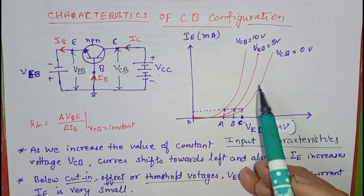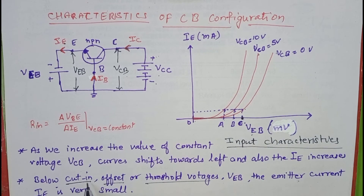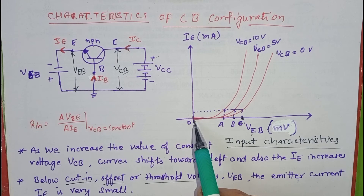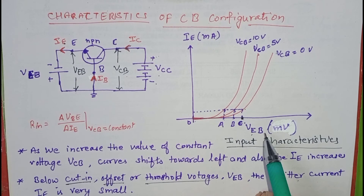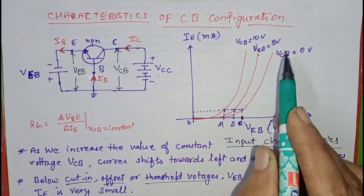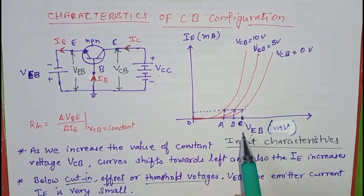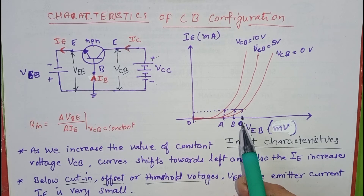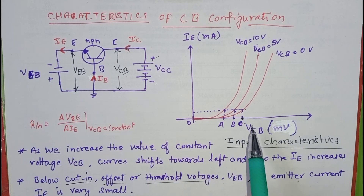By observing this curve, we can see clearly when the value of VEB is less than cut-in voltage, offset voltage, or threshold voltage — these are all the same — then IE is very small. But when we increase the value of VEB even very slightly beyond this point, there is a large increase in the current IE. When there is a rapid increase in IE with a small change in VEB, this shows that the input resistance is very less, because this junction is forward biased.